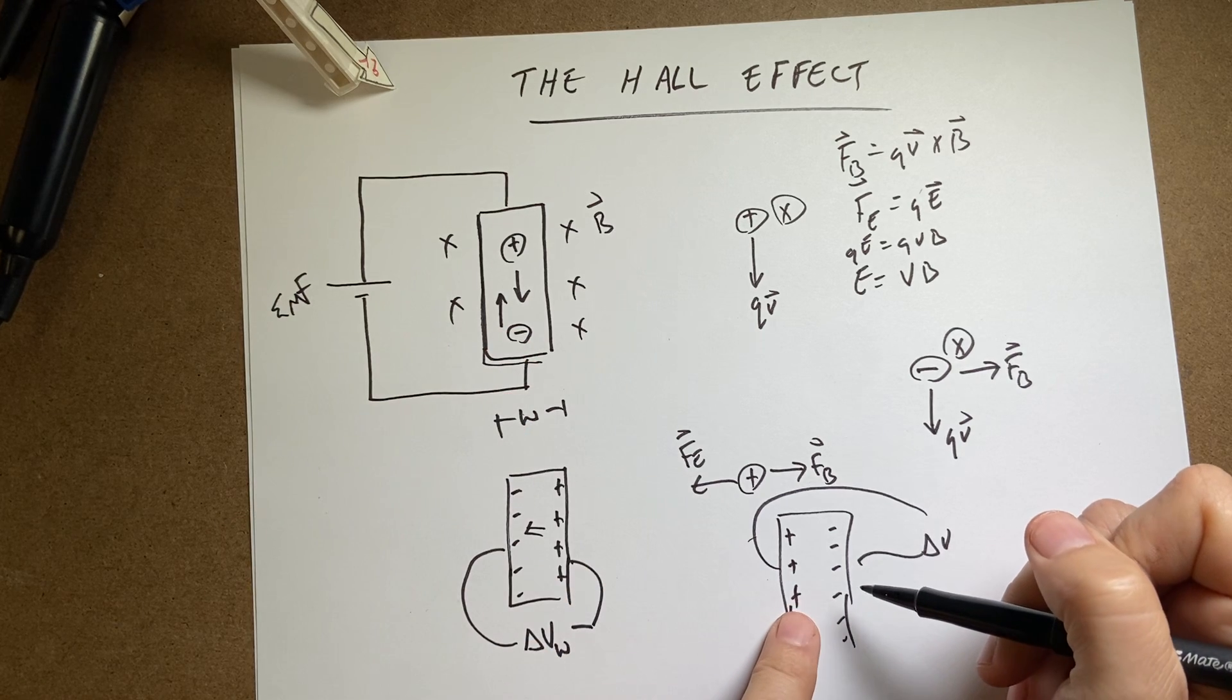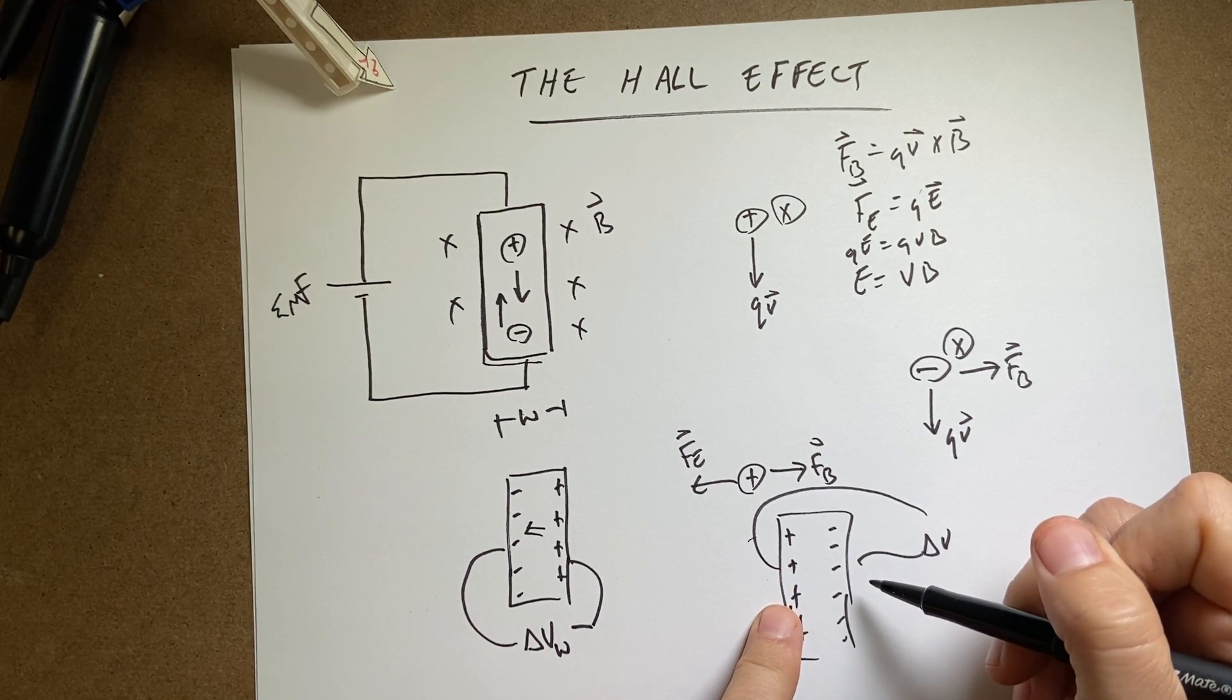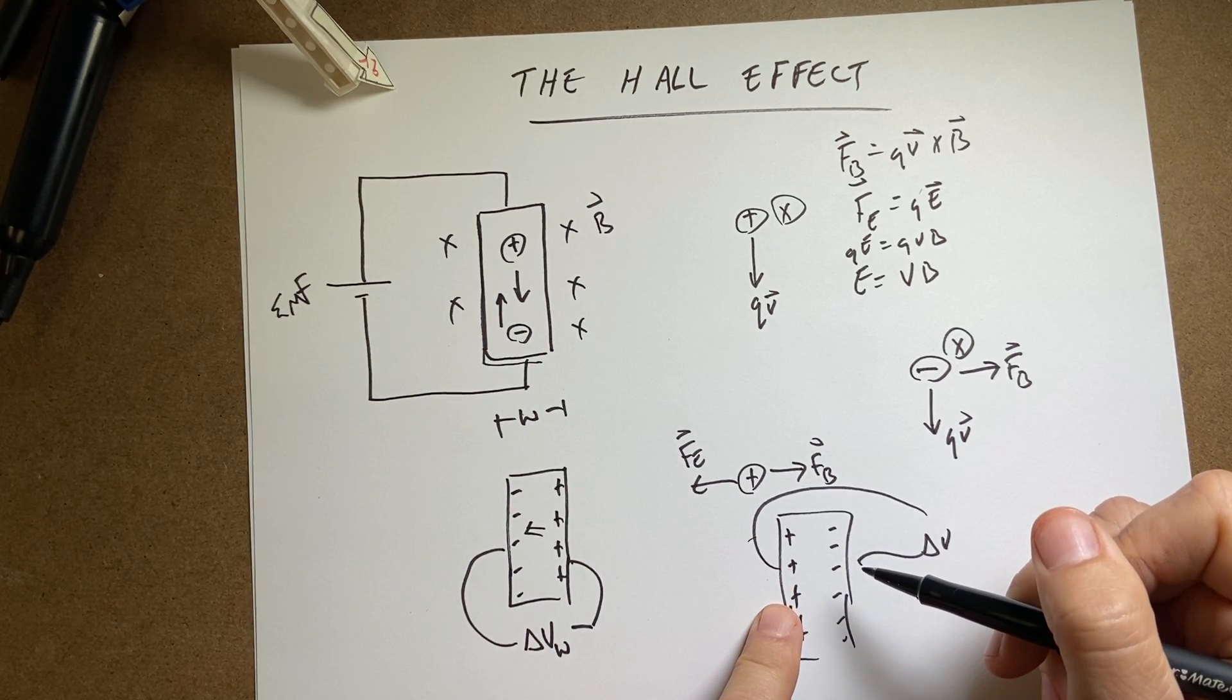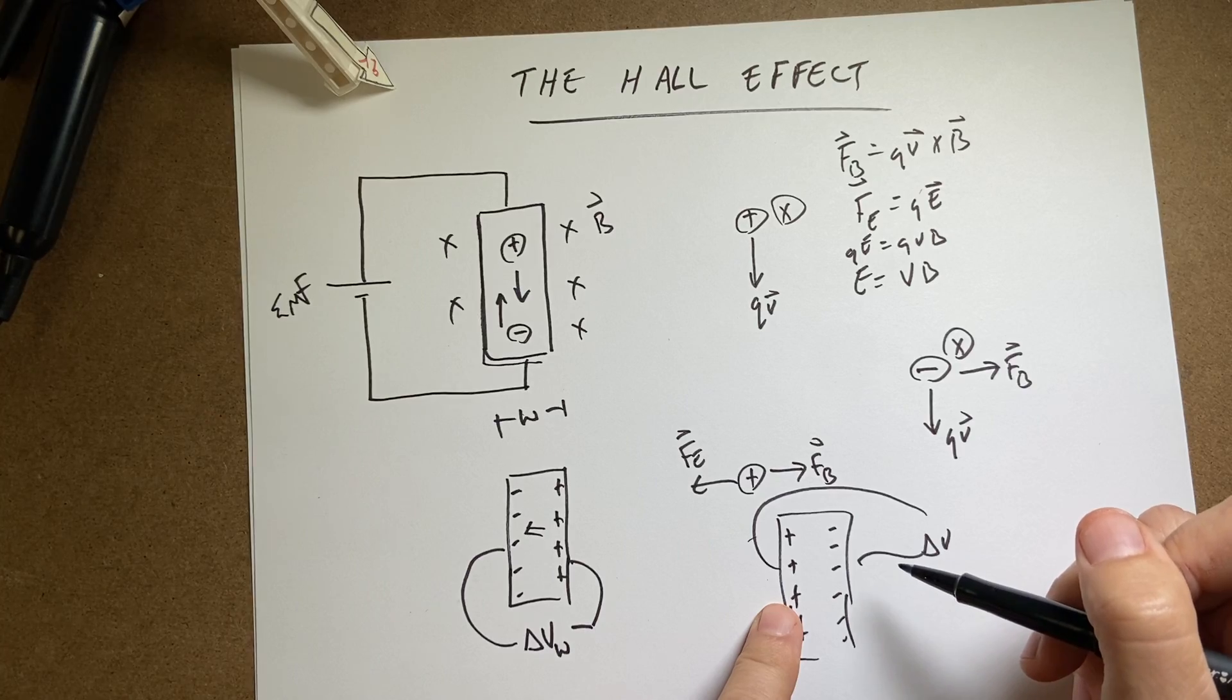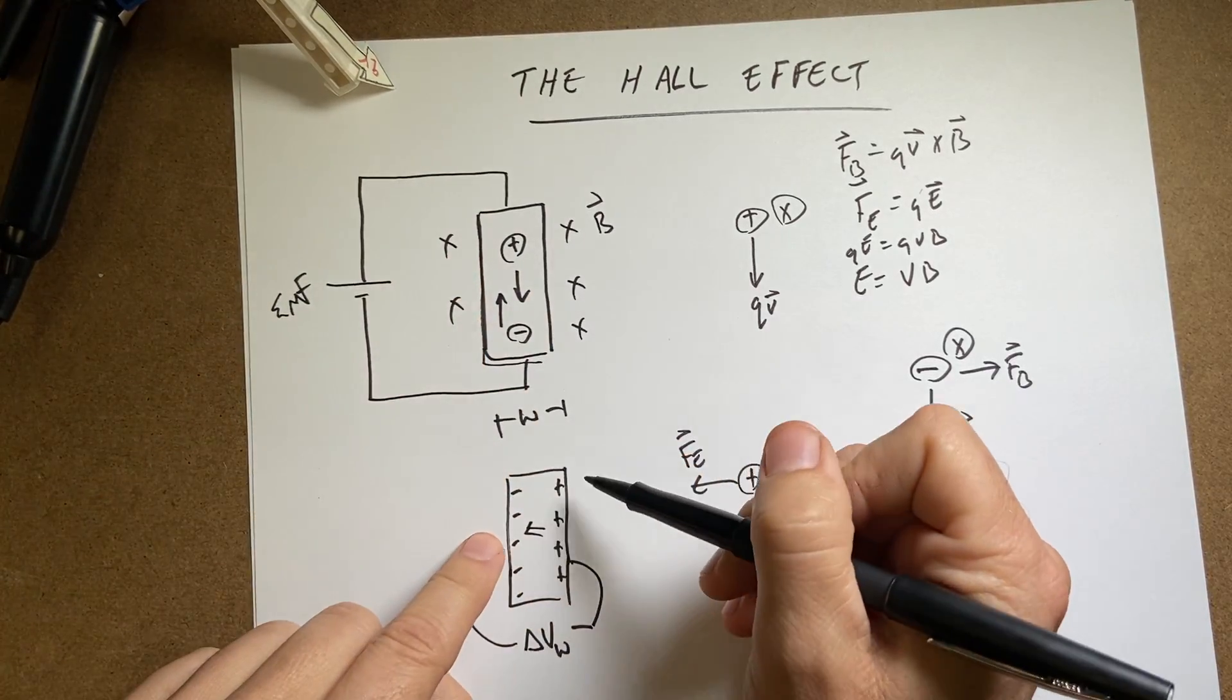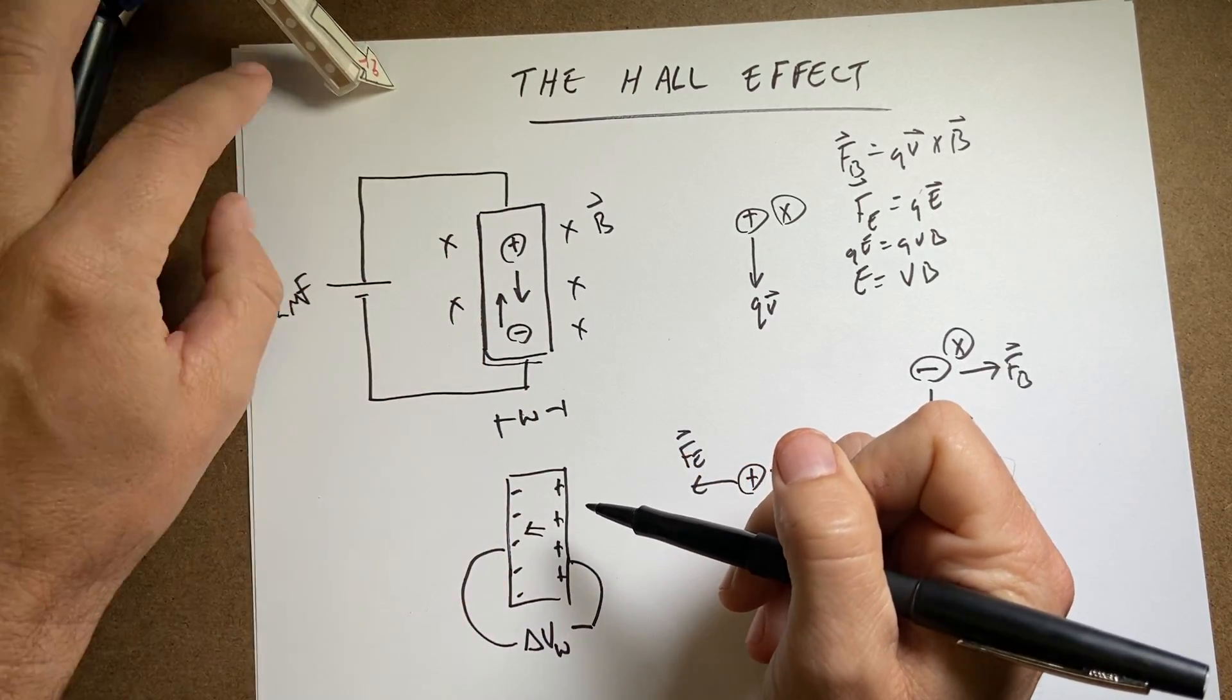So you can actually detect that change of voltage. Now warning, this is a very, very small voltage difference here. So you need a really good measurement tool to determine that. But that is the Hall effect, this side potential buildup due to a magnetic field.